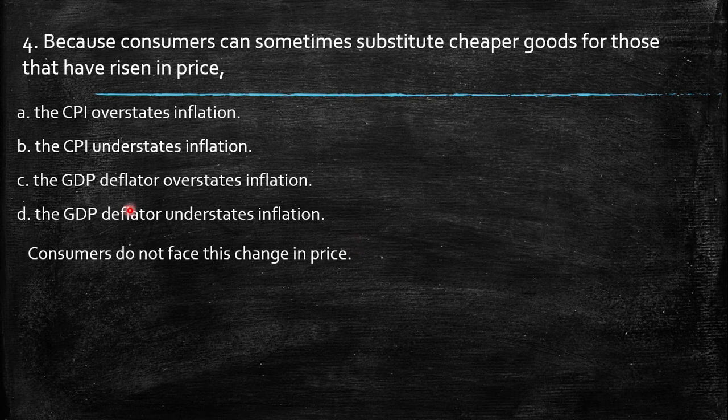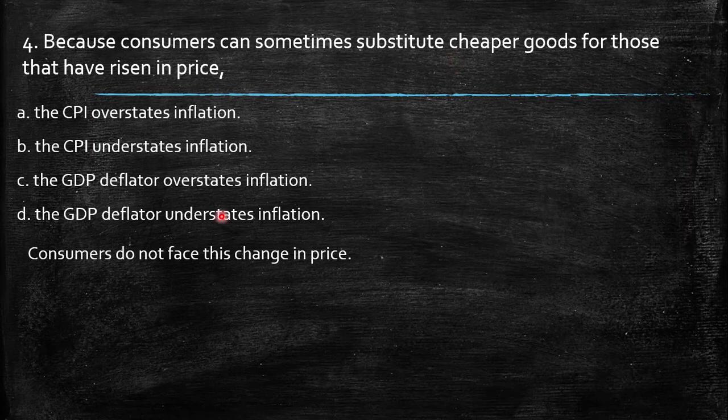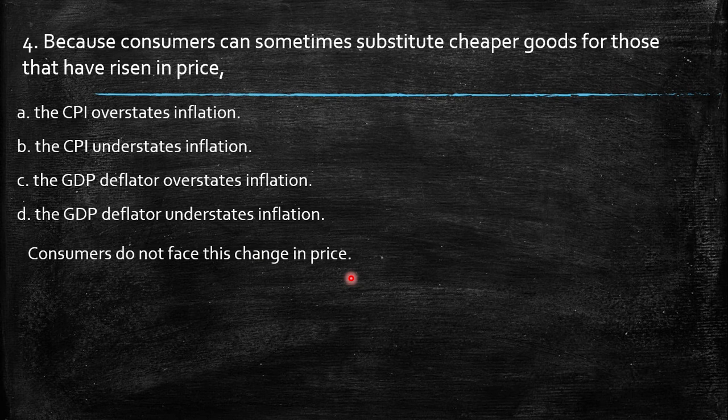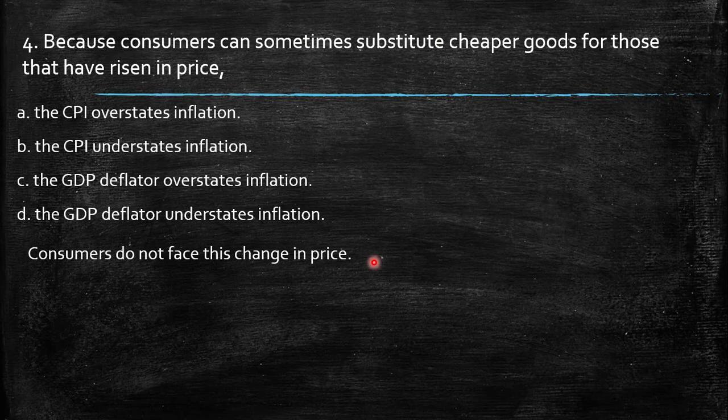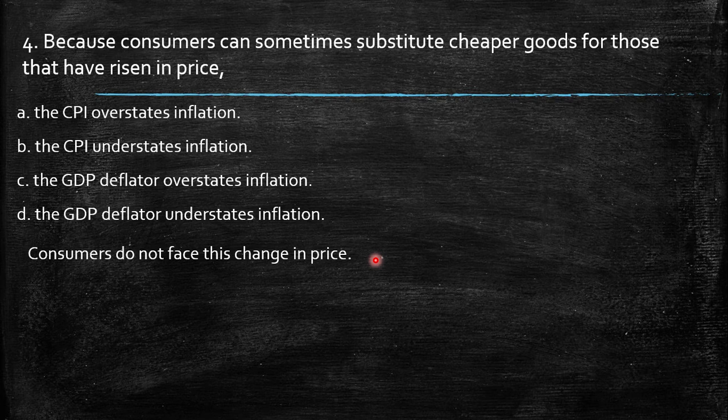So naturally the consumers, when you have this substitution effect, you are going to face this change of price. If you consume and you value in the same way apples and bananas, and the apple price rises, what is considered in the CPI, for example, and you are going to substitute that good for bananas, naturally...